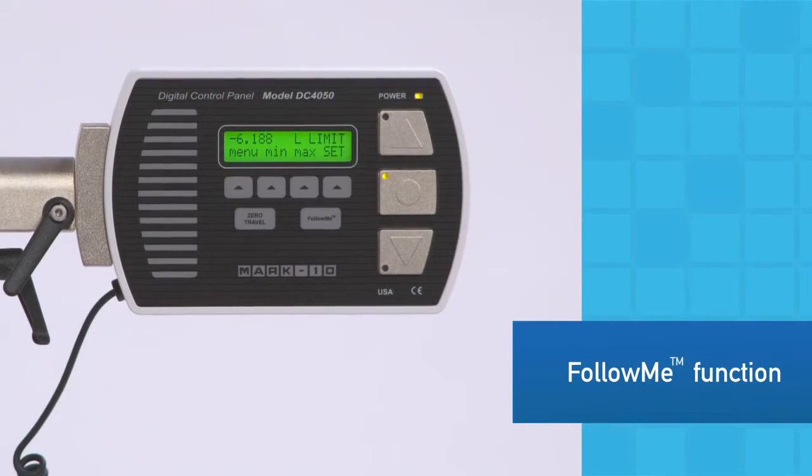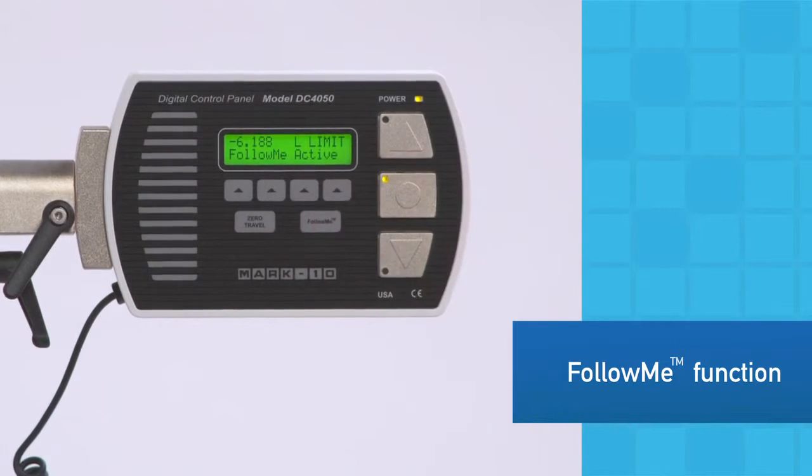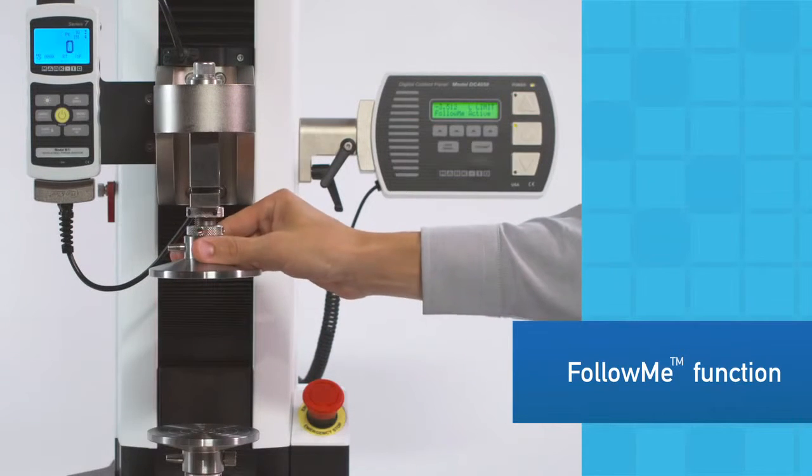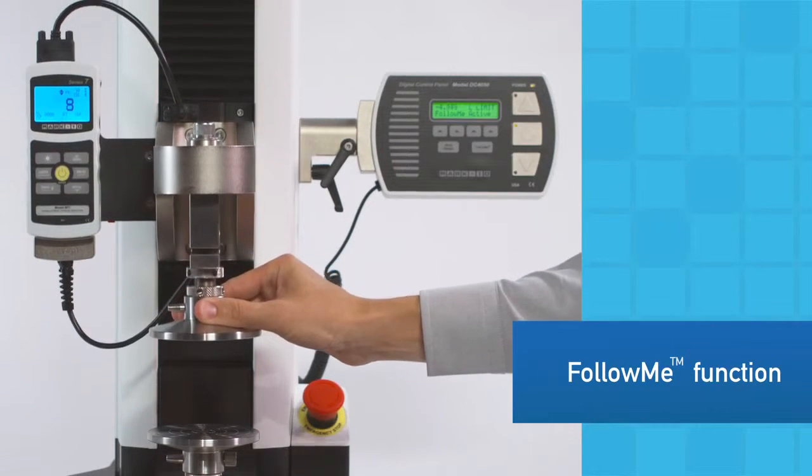Easily position the crosshead for sample setup with the unique follow-me function. Simply push and pull on the load cell or force gauge to move the crosshead. The greater the force, the faster the speed.